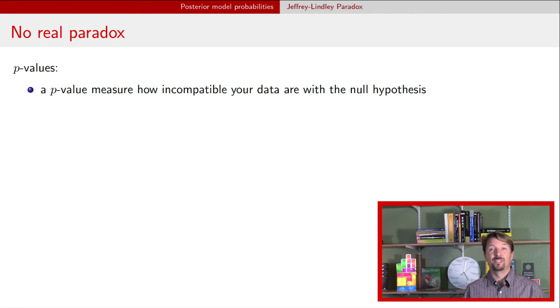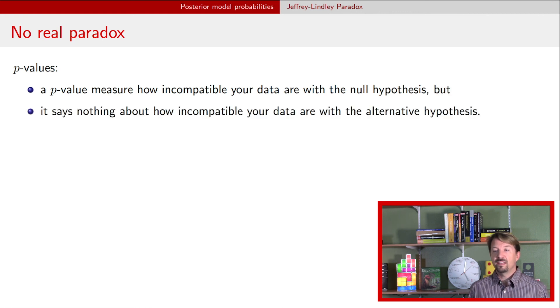So p-values, as a reminder, measure how incompatible your data are with that model associated with the null hypothesis. And it says nothing about how incompatible the data are with that alternative. So all it does is really say something about that null model and about how incompatible your data is with that model.